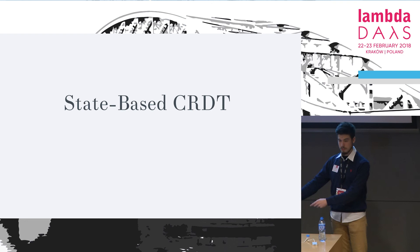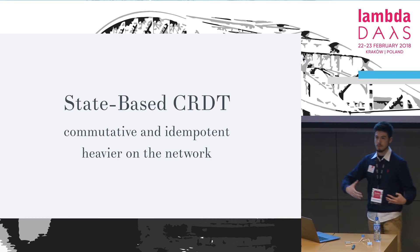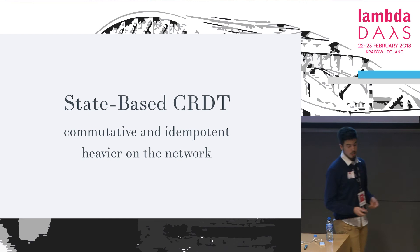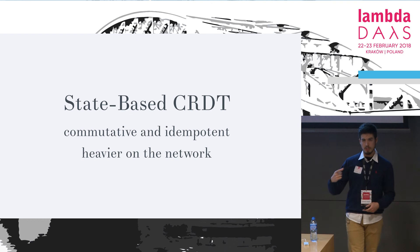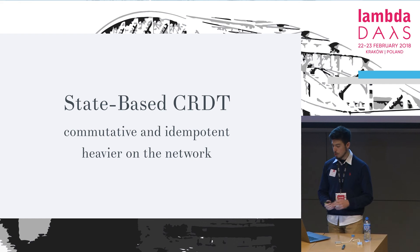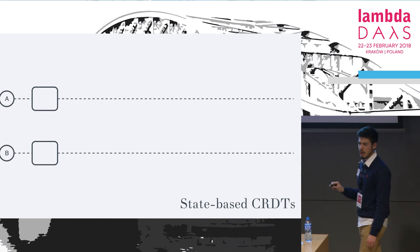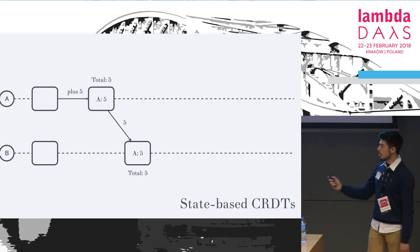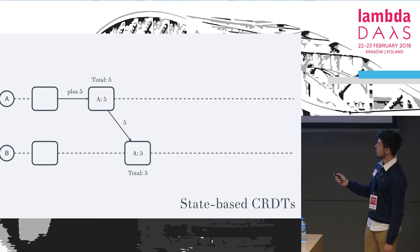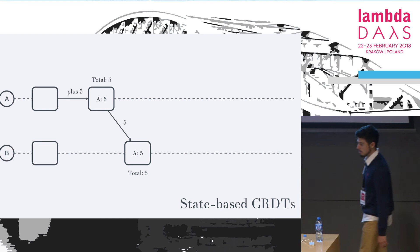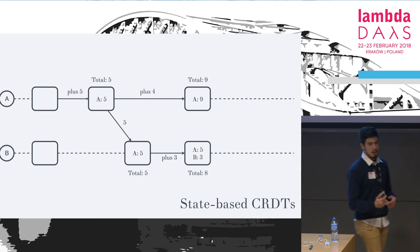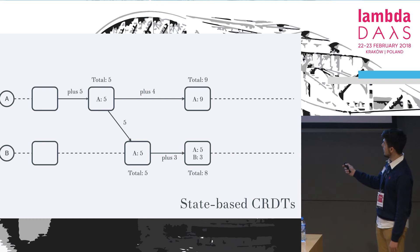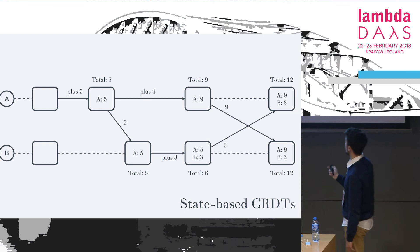With state-based CRDTs you send the actual representation of state, which can be heavy on the network — you're sending large amounts of data. There are ways to send only deltas but we won't go into that. For a distributed counter: node A adds 5, total is 5, sends it to B — B's total is also 5. Then they do different operations. In node B you have two different versions of the counter, but this isn't the actual representation; you add both to get the counter value. Eventually you find a point where the system has the correct representation.